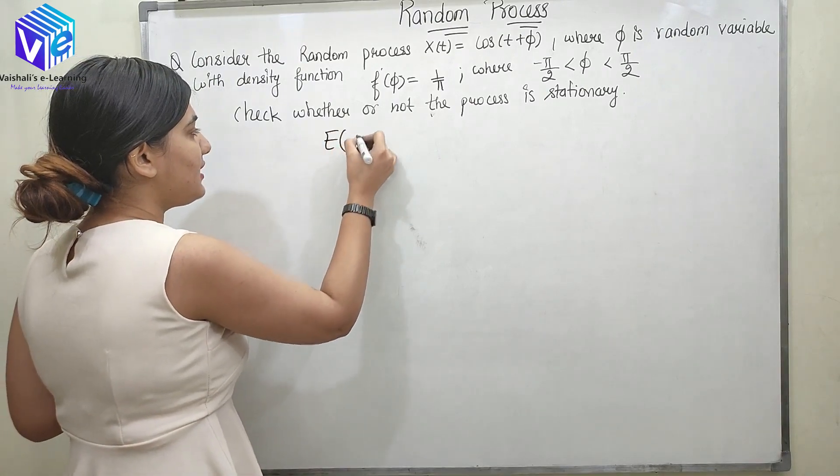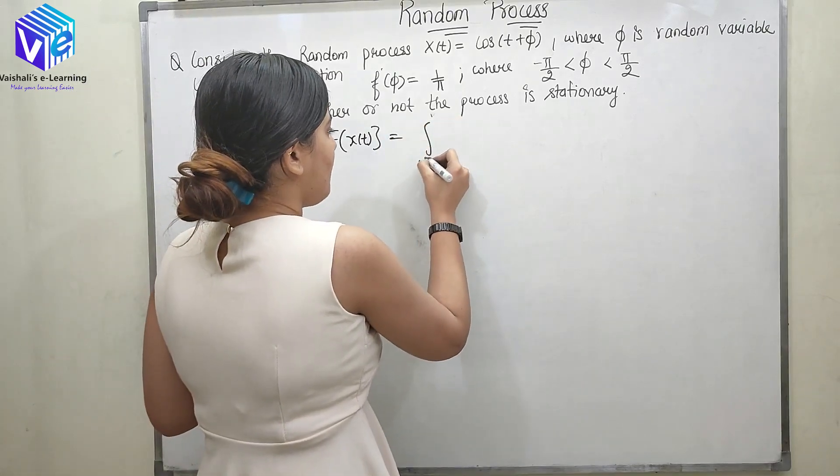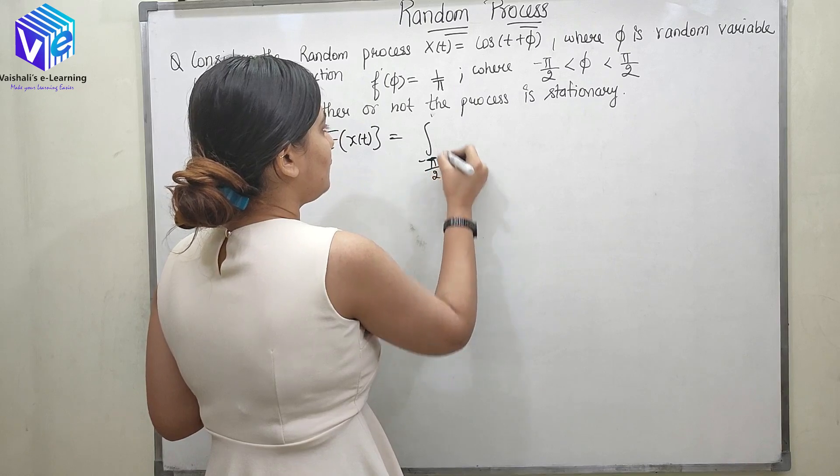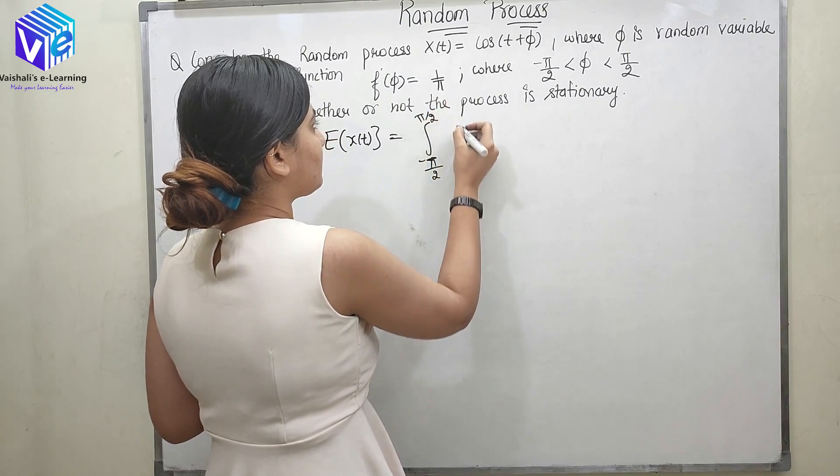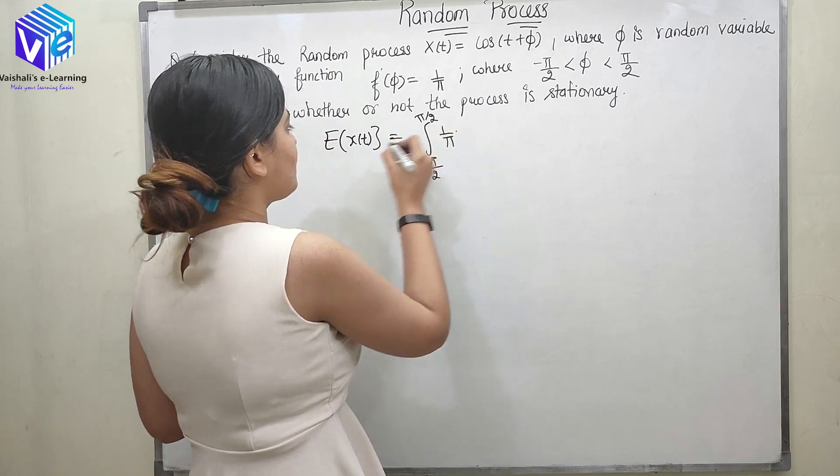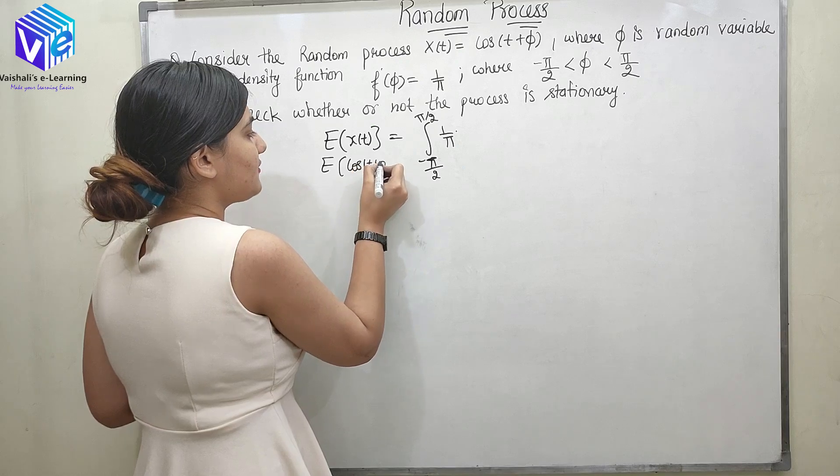I know that mean of X(t) is equal to... so here it is changing from minus π/2 to π/2. f(φ) is 1/π. So E[X(t)] = E[cos(t + φ)].